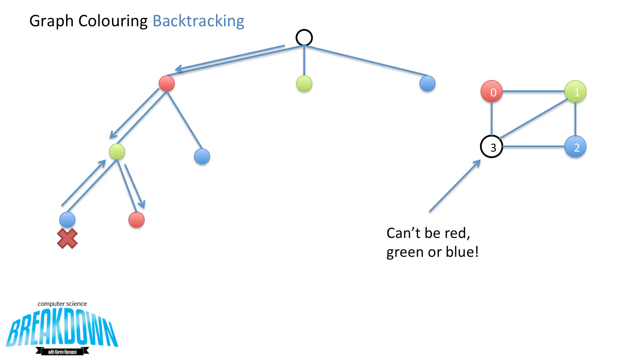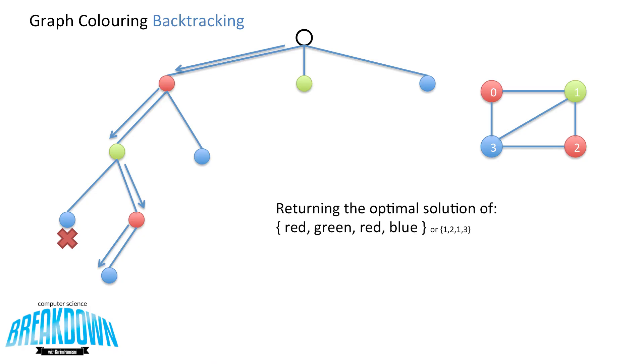So we now set node 2 equal to red. So now that we're at node 2, we have one option to set node 3, and that's blue. So we go ahead and go down the tree and set 3 equal to blue. So now we look back at the graph, and all four nodes are filled, and no two adjacent vertices share a color. So we've just returned an optimal solution of red, green, red, blue. Or in number form, it's 1, 2, 1, 3.